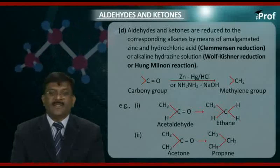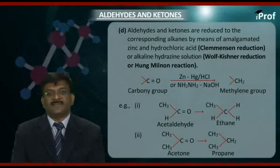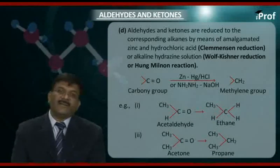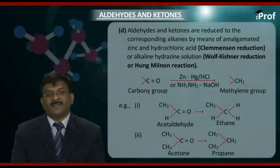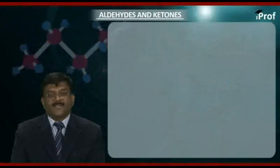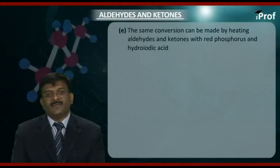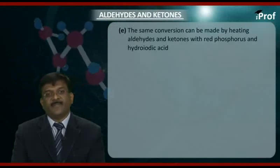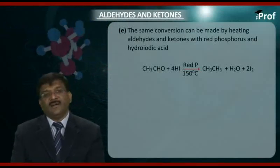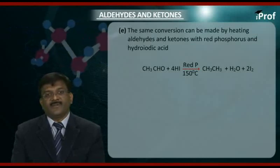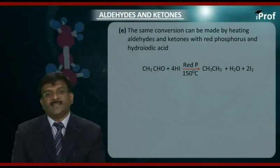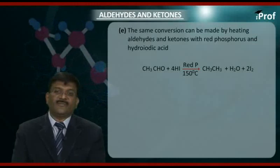For example, acetaldehyde under such conditions forms the corresponding alkane ethane. Similarly, acetone under the same conditions forms propane. The same conversion can be made by heating aldehydes and ketones with red phosphorus and hydroiodic acid. For example, CH3CHO reacting with 4HI in presence of red phosphorus at 150°C loses a molecule of water to form the corresponding alkane CH3CH3 along with the formation of iodine.